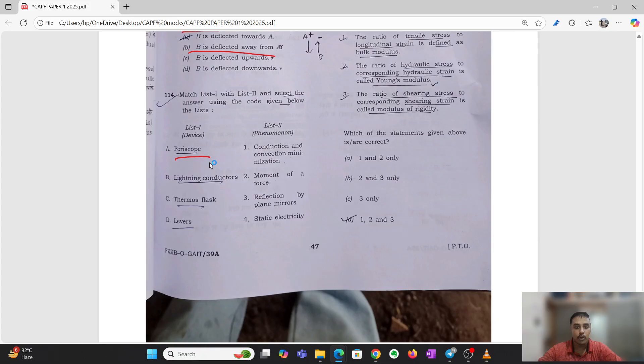Periscope uses reflection of plane mirrors, that is A3. Lightning conductors, static electricity, B4. Thermos flask, conduction and convection minimization, C1. Levers, D2. So your answer would be A3, B4, C1, D2. Consider the following statements regarding mechanical properties of solids: the ratio of tensile stress to longitudinal strain is defined as bulk modulus, this is wrong because it is Young's modulus. The ratio of hydraulic stress to corresponding hydraulic strain is called Young's modulus. The ratio of shear stress to corresponding shear strain is called modulus rigidity, the third one is right.